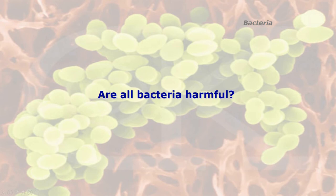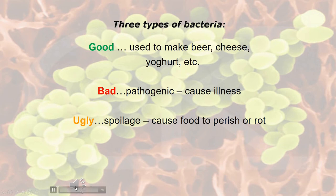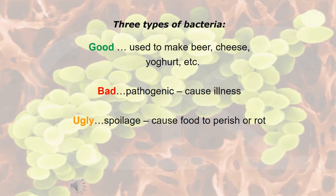Are all bacteria harmful? No — there are three types: the good, the bad and the ugly. Good bacteria are used to make beer, cheese and yoghurt, adding to taste or extending longevity. The bad ones are the pathogenic bacteria that cause illness. And the ugly ones are the spoilage bacteria that cause food to perish or rot. Remember those three types.